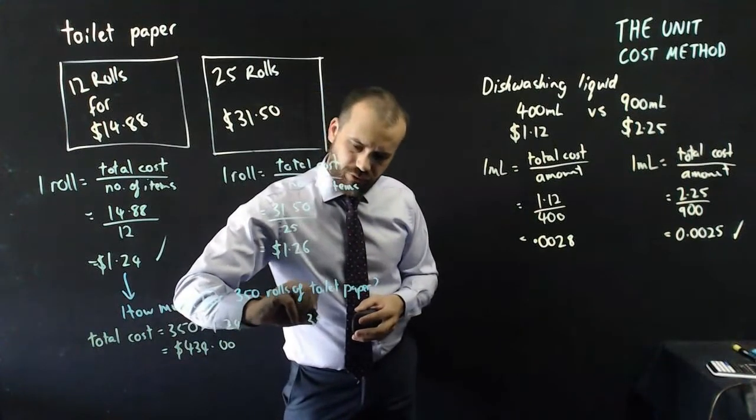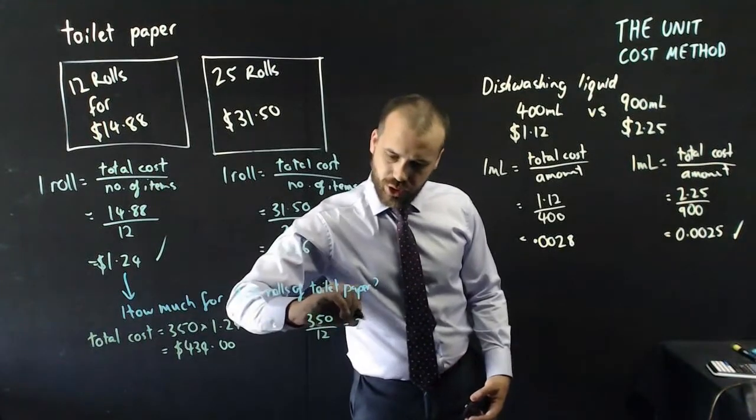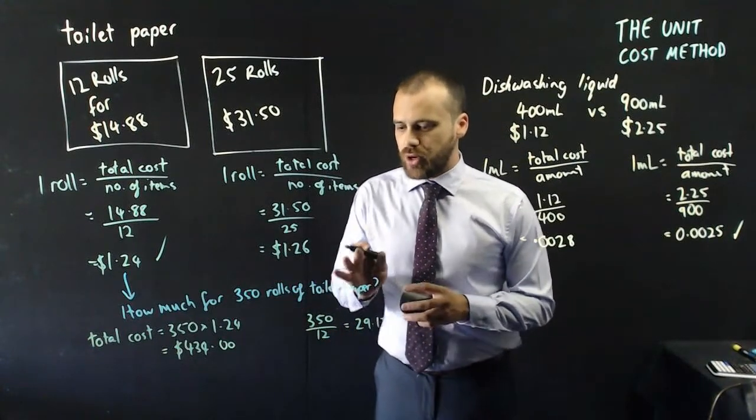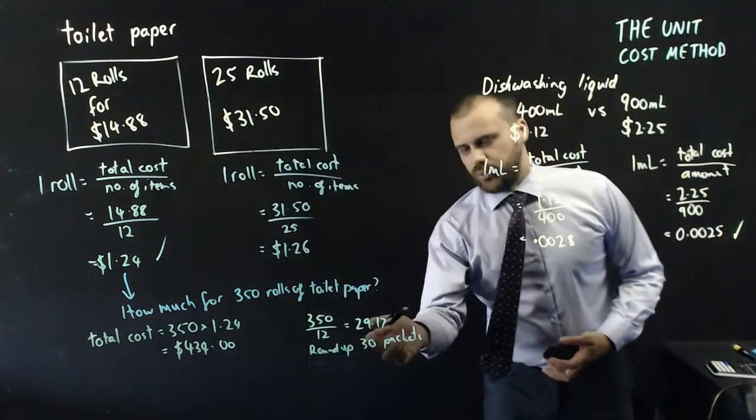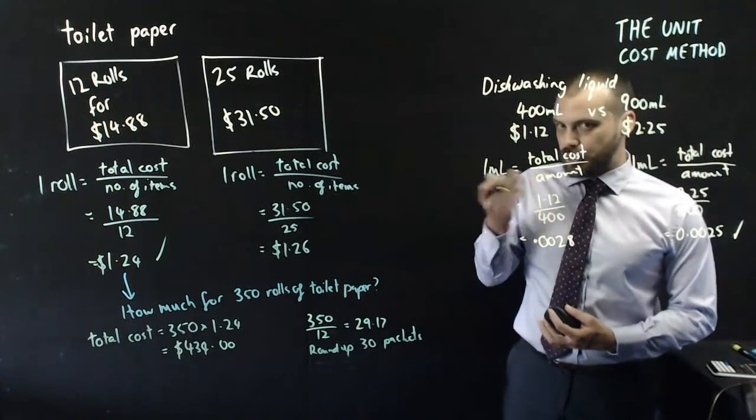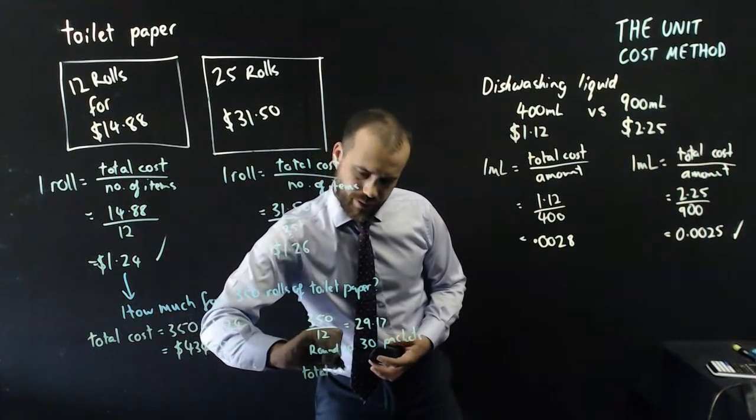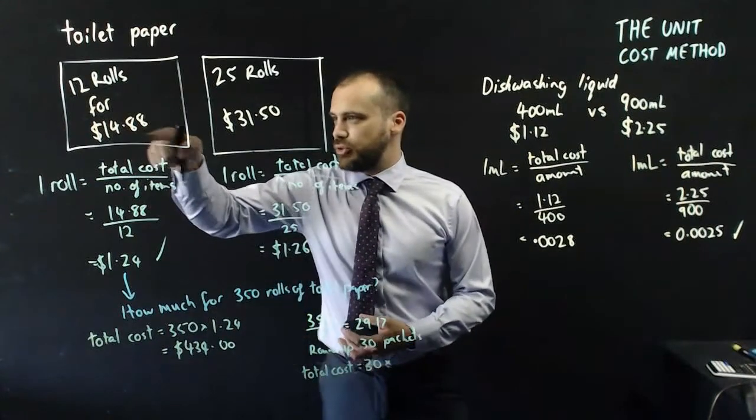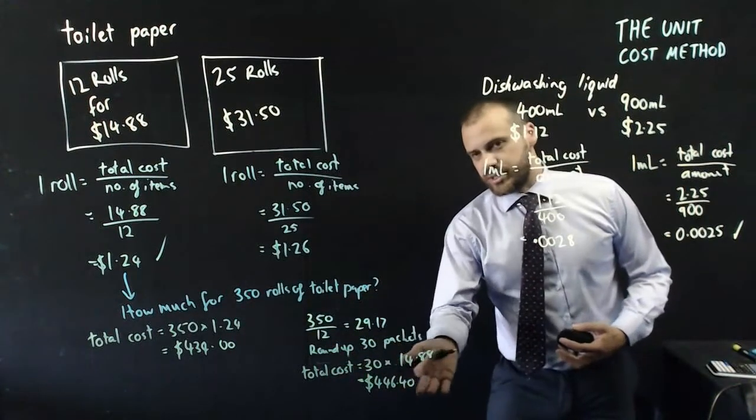If I do 350 divided by 12, my answer is 29.17. That means that if I want exactly 350 rolls of toilet paper, I'd have to buy 29.17 packets of toilet paper. But you can't buy 29.17 packets of toilet paper, so you have to round up to 30 packets of toilet paper. And if you have to round up to 30 packets of toilet paper, it means that the total cost is going to be 30 packets of toilet paper times, not $1.24, but the total cost of each packet, $14.88, which is $446.40.